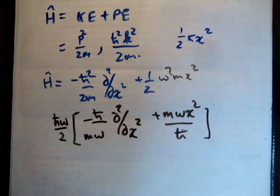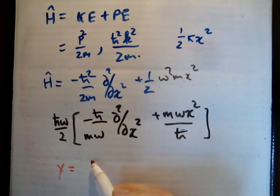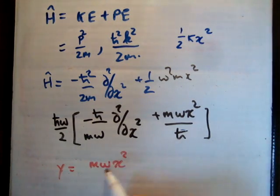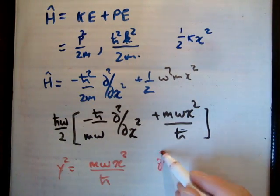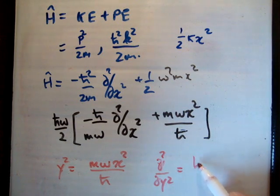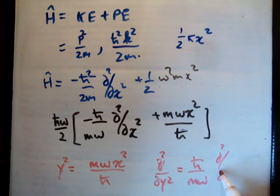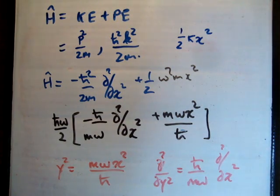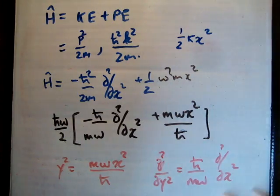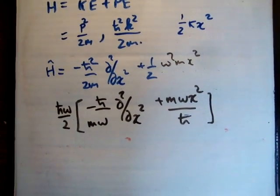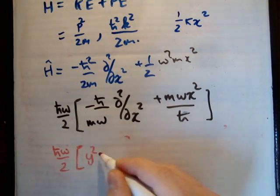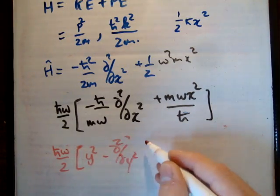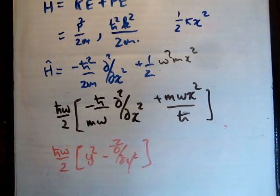Now I'm going to make another substitution, defining y such that y squared equals m-omega x-squared over h-bar, and del-squared over del-y-squared equals h-bar over m-omega times del-squared over del-x-squared. These are just substitutions that very smart people made and they turn out to be very useful. That means our Hamiltonian now looks like h-bar omega over 2 times the quantity y squared minus del-squared over del-y-squared. That is our new Schrödinger equation.